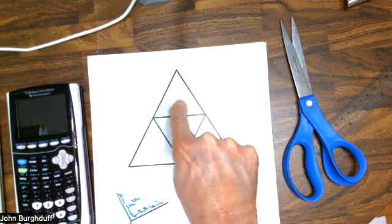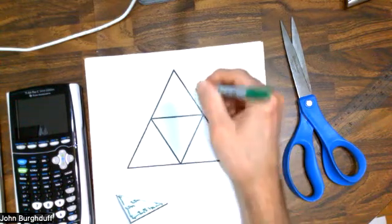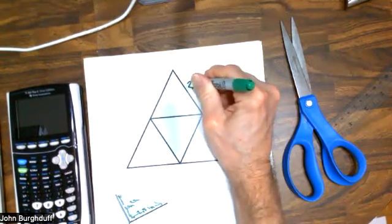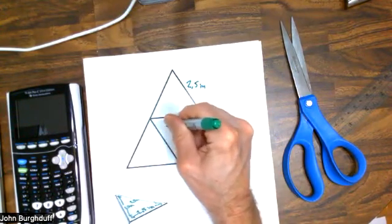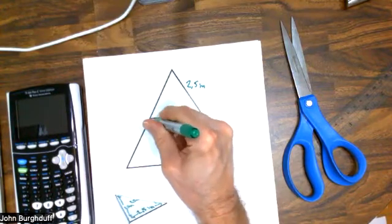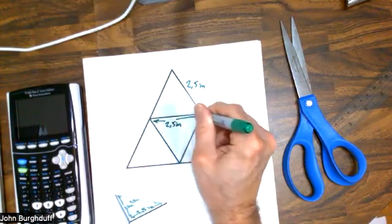Let's focus for a minute on the top triangle. This is 2.5 inches along this side. This is also 2.5 inches along this side. We'll mark that so you know exactly what I'm talking about.